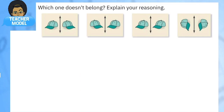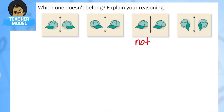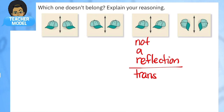Let's start with a brain warm-up: which one of these doesn't belong? The other three have something in common. They all have two caps and a line in the middle. Looking at the figures, they are reflections of one another — symmetrical with a line of symmetry. But one of them is not a reflection; it's actually just a translation, which is a slide.